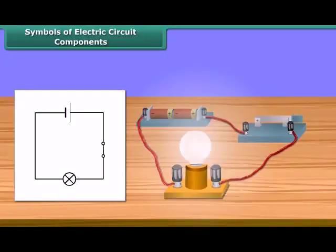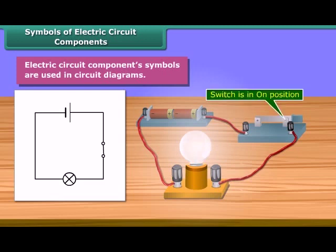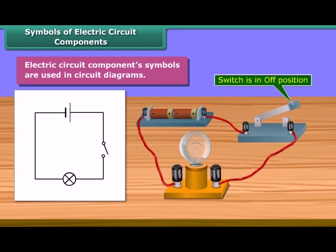Electric circuit component symbols are used to make circuit diagrams. It is much easier to represent a circuit diagram using symbols. This is the symbol of a switch in the on position; this one is in the off position.